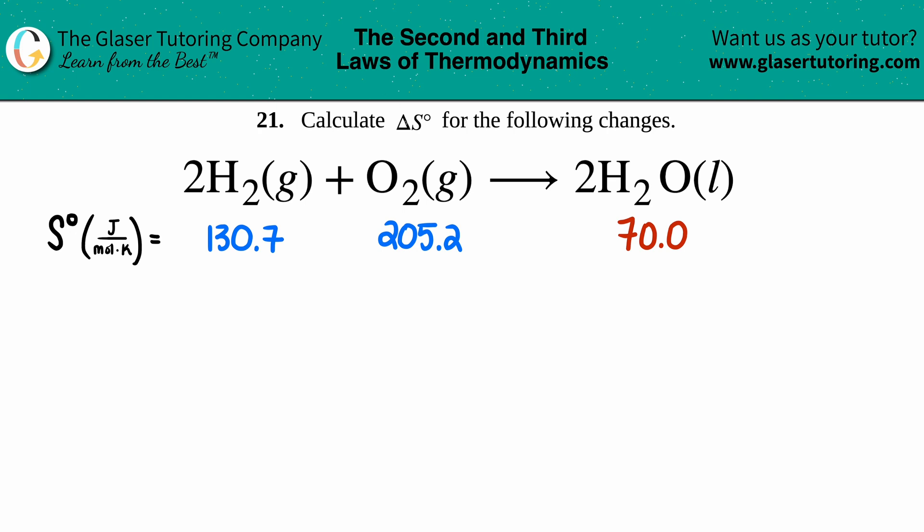Number 21: Calculate the delta S notch for the following changes. We have this balanced equation: 2H₂ gas plus O₂ gas gives me 2H₂O liquid. So delta S, we want to find that out, an actual numerical value.